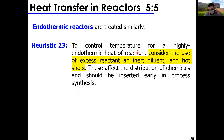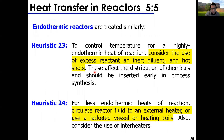Endothermic reactions are treated very similarly in reverse. To control temperature for highly endothermic heats of reaction, use excess reactant as a diluent or hot shots. For less endothermic heats of reaction, circulate reactor fluid to an external heater or use a jacketed vessel with a heating coil.